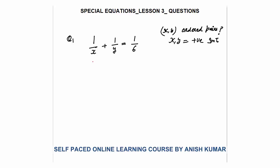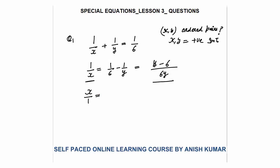The first task in all such questions is to separate the variables. So 1/x = 1/6 − 1/y, which gives 1/x = (y − 6) / 6y. Reversing both fractions, x = 6y / (y − 6).